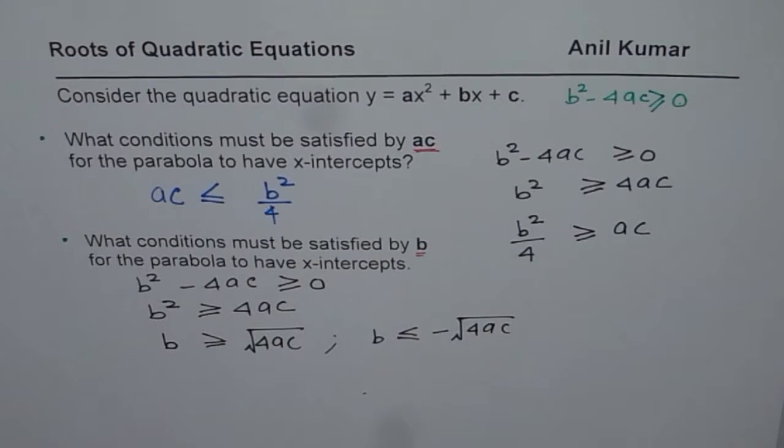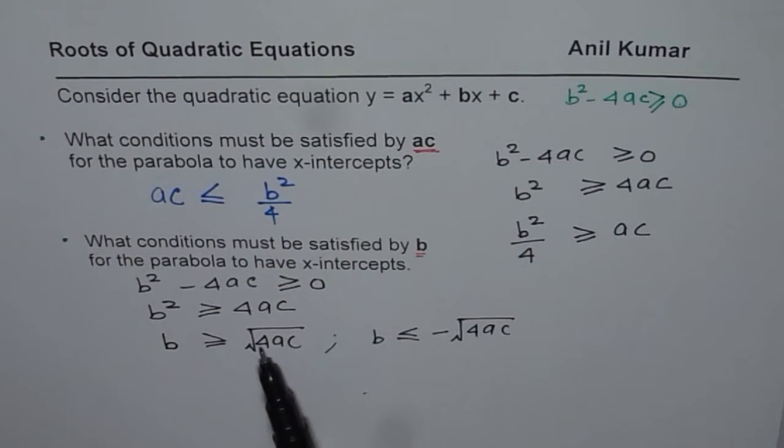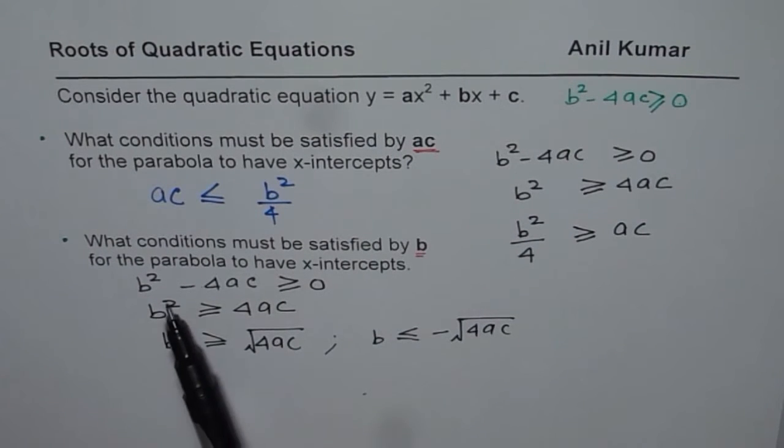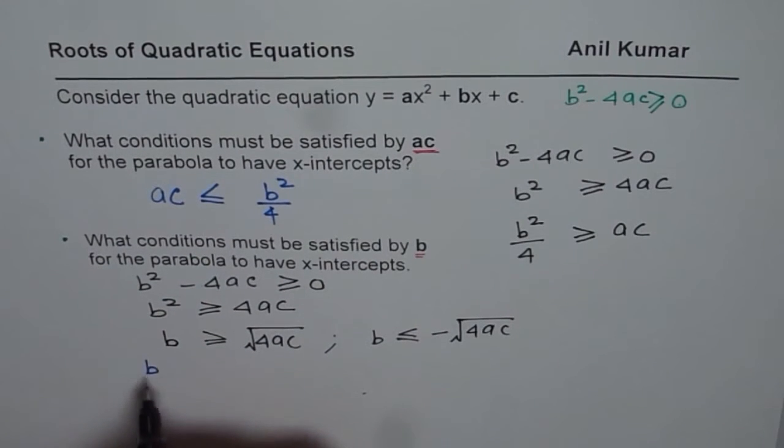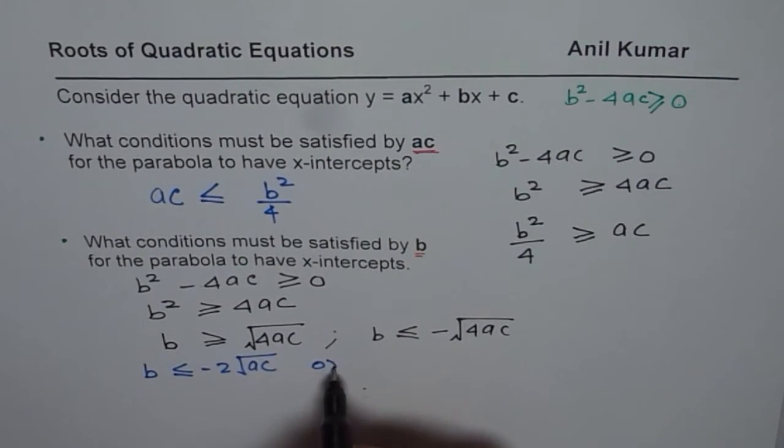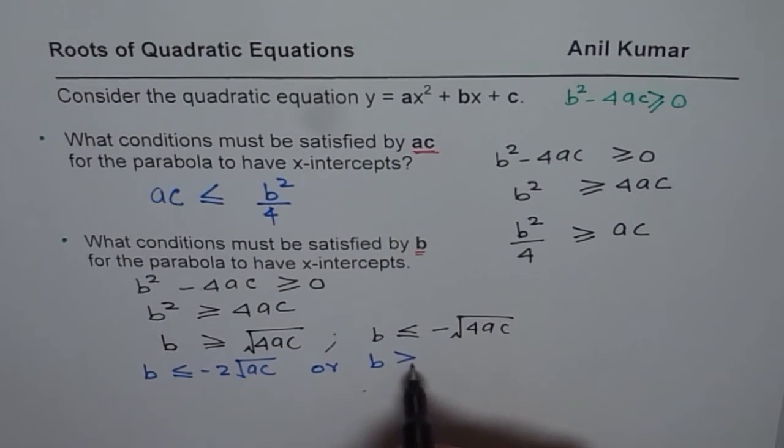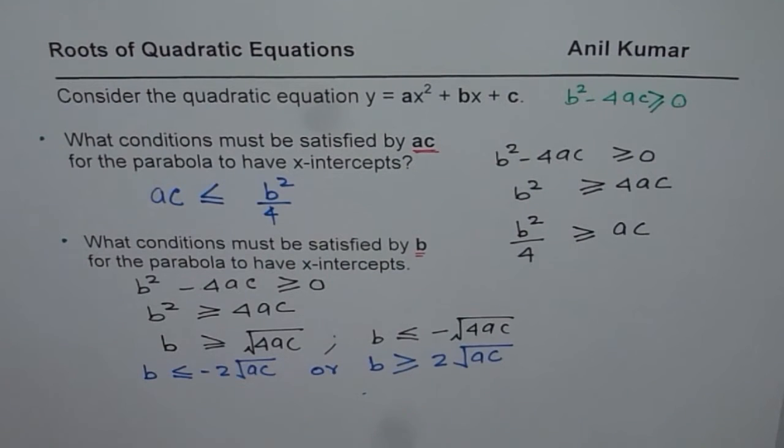That is what we are getting to. So either b is greater than or equal to square root of 4ac, that is a plus one, or b is less than this. So b square will always be positive, remember that. So simplifying these, square root of 4 could be written as 2. I could write that b should be less than or equal to minus 2 square root of ac, or b should be greater than or equal to 2 square root of ac. That is kind of very important to understand.